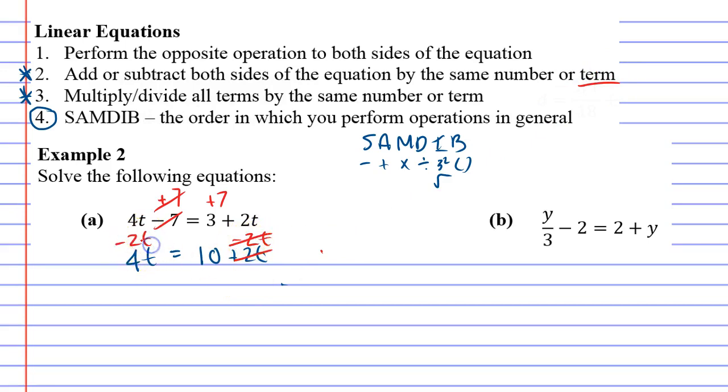Now this will be fine because 4t minus 2t is 2t, leaving us with 2t equals 10. And now it becomes quite basic to solve because we can divide both sides by 2, leaving us with t equals 5.